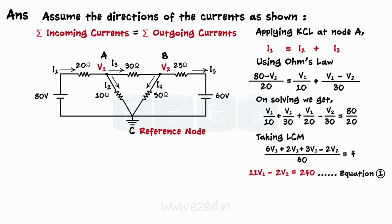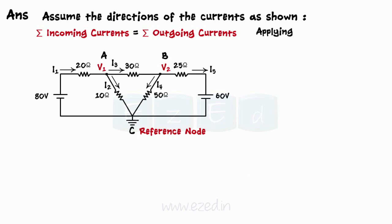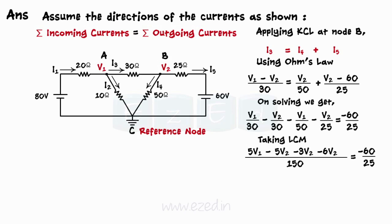Applying KCL at node B, I3 equals I4 plus I5. Using Ohm's law, V1 minus V2 upon 30 equals V2 upon 50 plus V2 minus 60 upon 25. Simplifying, we get 5V1 minus 14V2 equals minus 360.